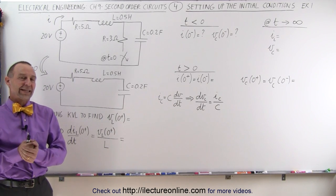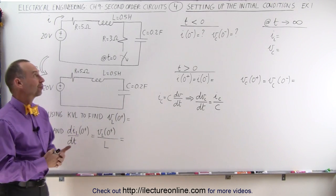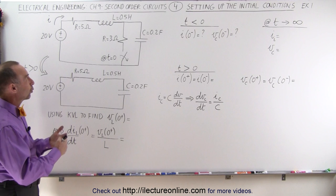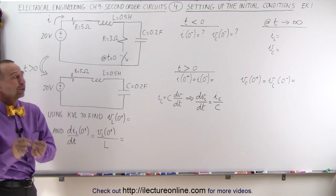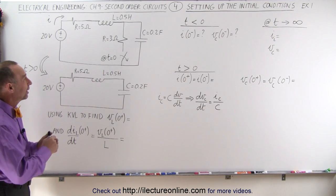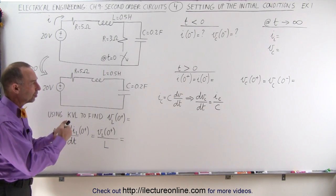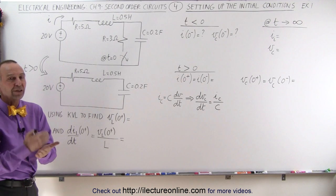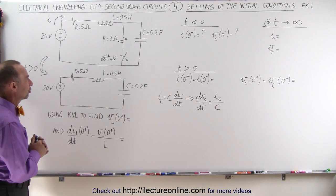Welcome to ElectronLine. Here's our first example of how to solve a second order circuit. What we're going to do at this point is find all the initial, the transient, and the final conditions of the circuit.